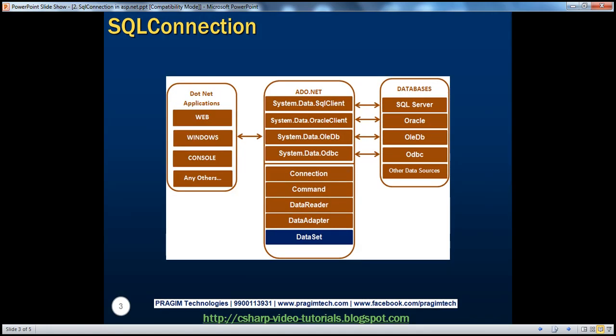From part 1, it should be clear that ADO.NET is a set of classes that helps a .NET application communicate with the data source, execute commands, retrieve data, and display the data within the application. ADO.NET has these important classes: the Connection, Command, DataReader, DataAdapter, and DataSet classes.